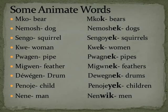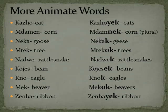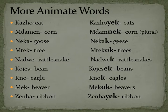Nene, man — Nenwyk, men. Some more animate words: Kajo, cat — Kajoyak, cats. Ndamen, corn — Ndamenak, corn (more than one). Nika, goose — Nikaak, geese.